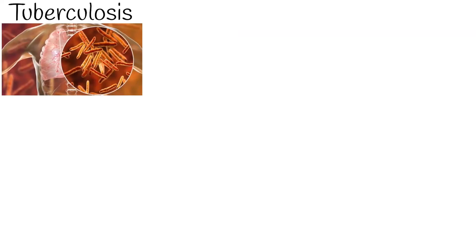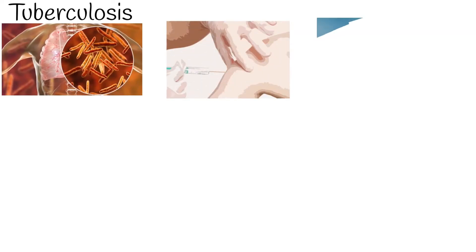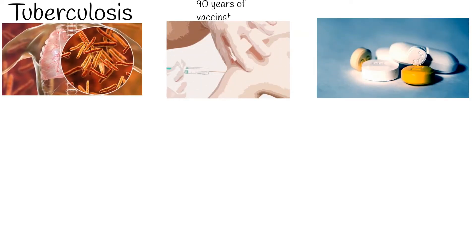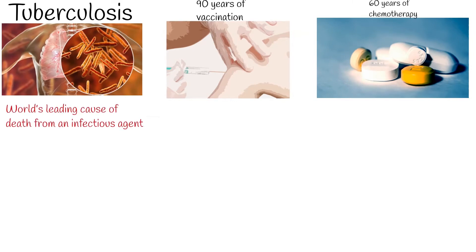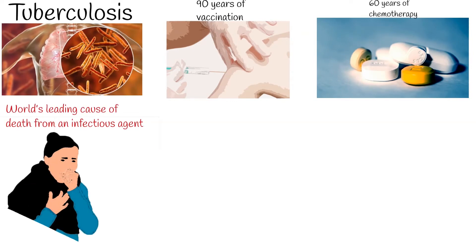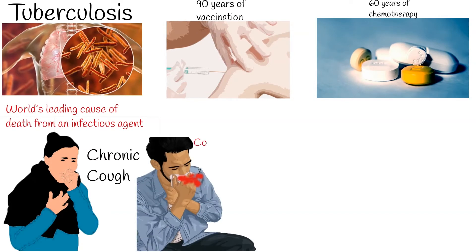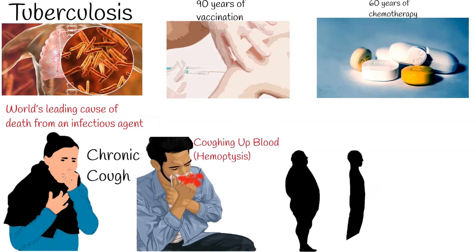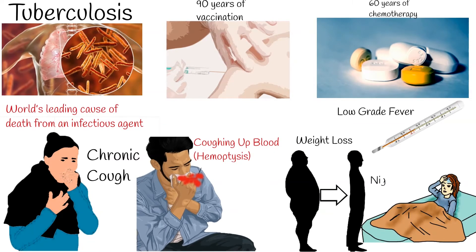Despite 90 years of vaccination and 60 years of chemotherapy, tuberculosis remains the world's leading cause of death from an infectious agent. A chronic cough, hemoptysis — coughing up blood — weight loss, low-grade fever, and night sweats are the most common physical findings in pulmonary tuberculosis.